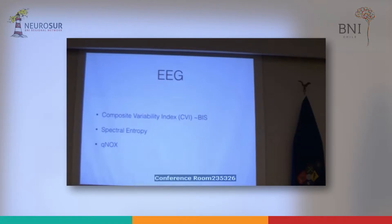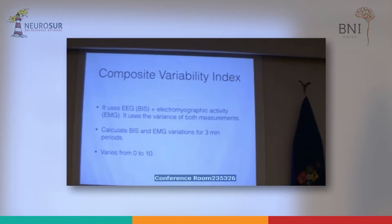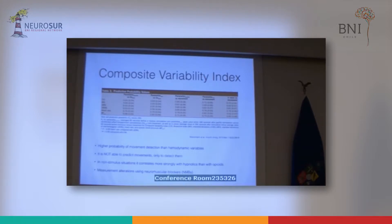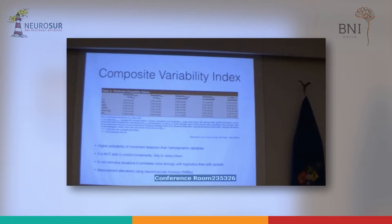And there's a new one, the QNOX, which I have read about but never even seen. The CVI Composite Variability Index uses EEG derived from BIS and EMG activity, and it uses the variance of both measures. Technically, it calculates variation over a three-minute period and gives you a pain or nociception index that goes from zero to ten. There have not been so many clinical studies on it. It has a higher probability of detecting movement — since we cannot ask a patient whether they're experiencing nociception under general anesthesia, one way to see is if the patient moves. If they're moving, we can say with some confidence that nociception is occurring.